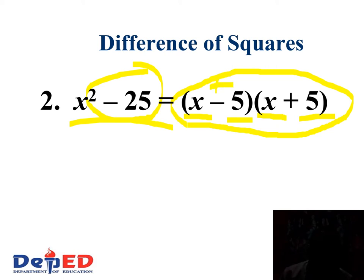It can be positive and it can be negative. That is because multiplication is commutative. For example, 5 times 4 is equal to 20, and 4 times 5 is also equal to 20. Therefore, multiplication is commutative.